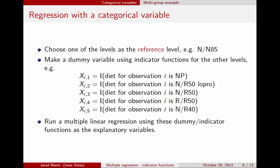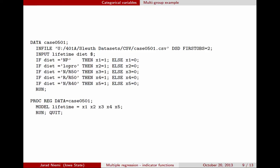Once we have these constructed, we run our multiple linear regression, because now we have more than one explanatory variable — in fact 5 of them. If you want to use PROC REG, you will have to manually construct these dummy variables. We have nN85 as our reference level, and we create dummy variables for the remainder: x1 is the NP diet, x2 is the low-pro diet, x3 is nR50, x4 is rR50, and x5 is nR40. Then we run our multiple regression model using PROC REG with lifetime as the response equal to this set of explanatory variables.